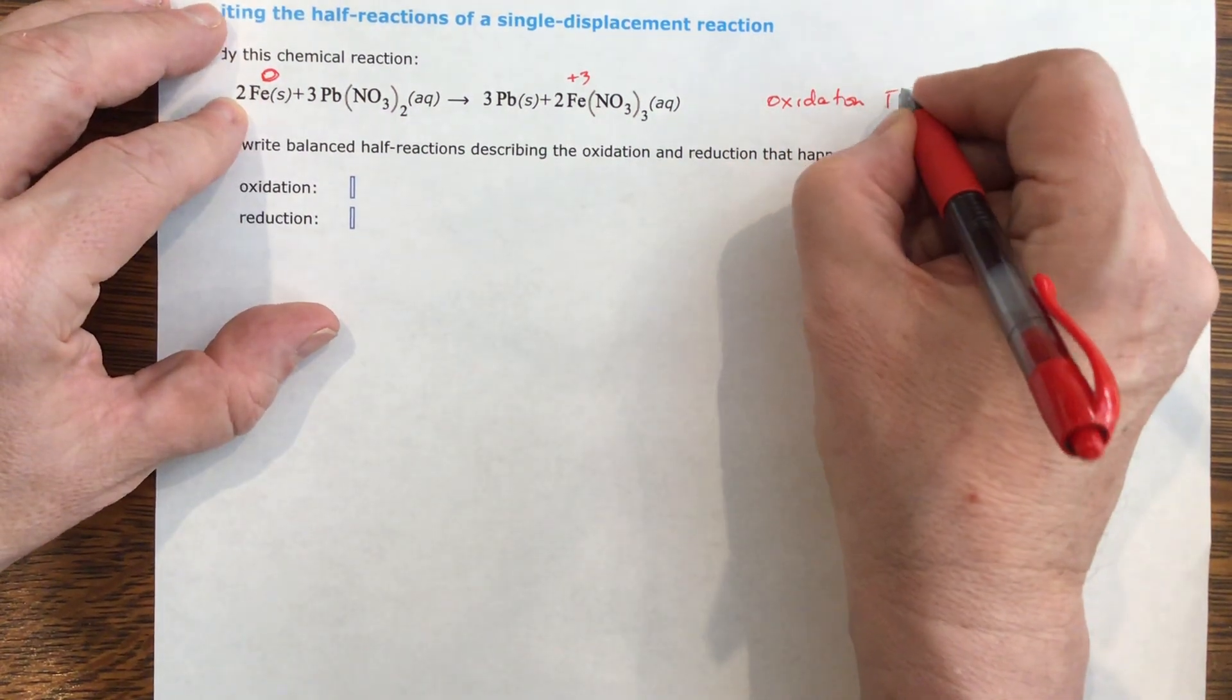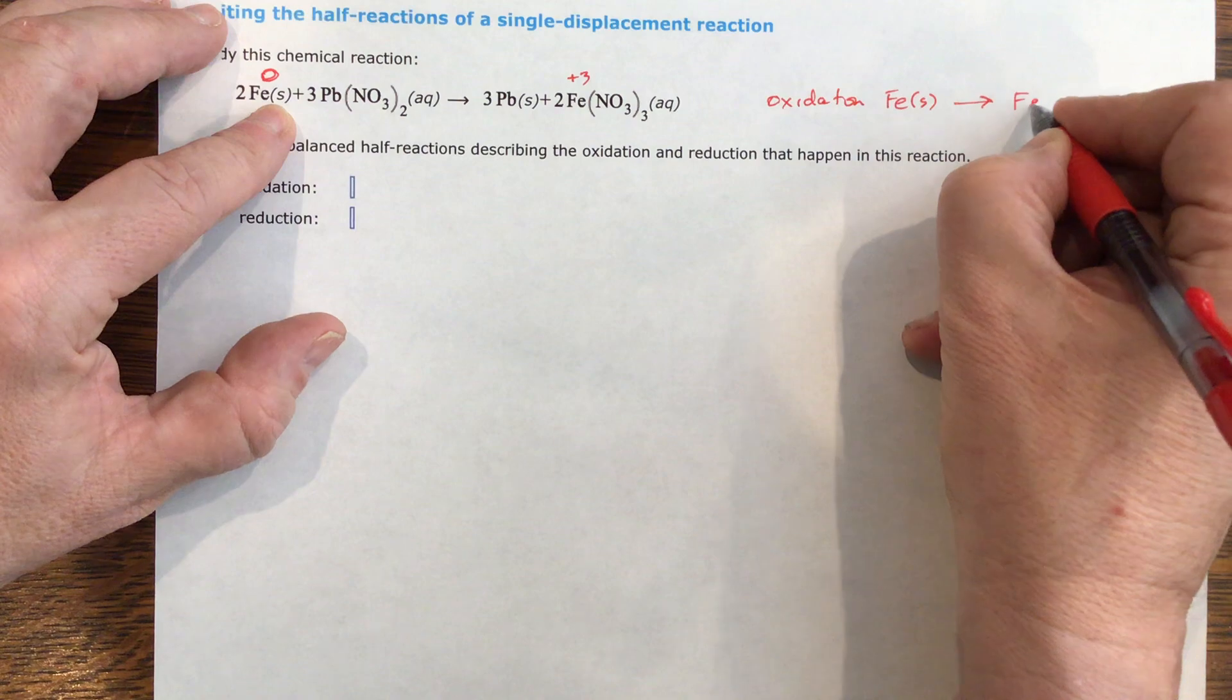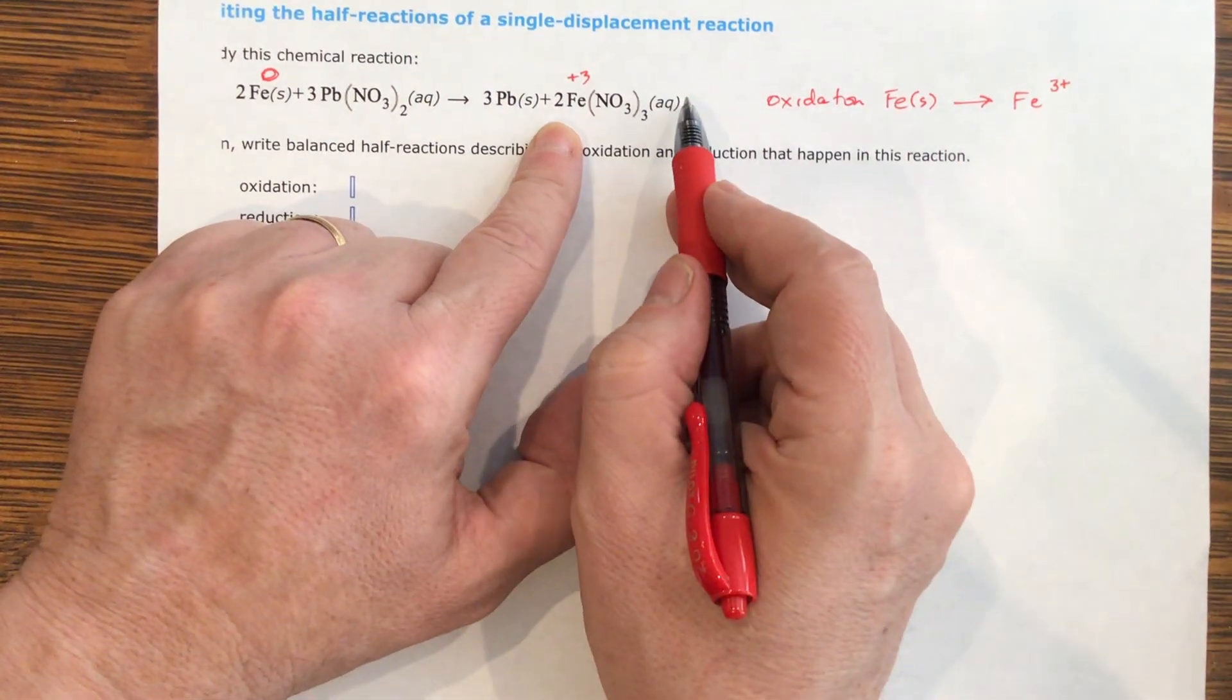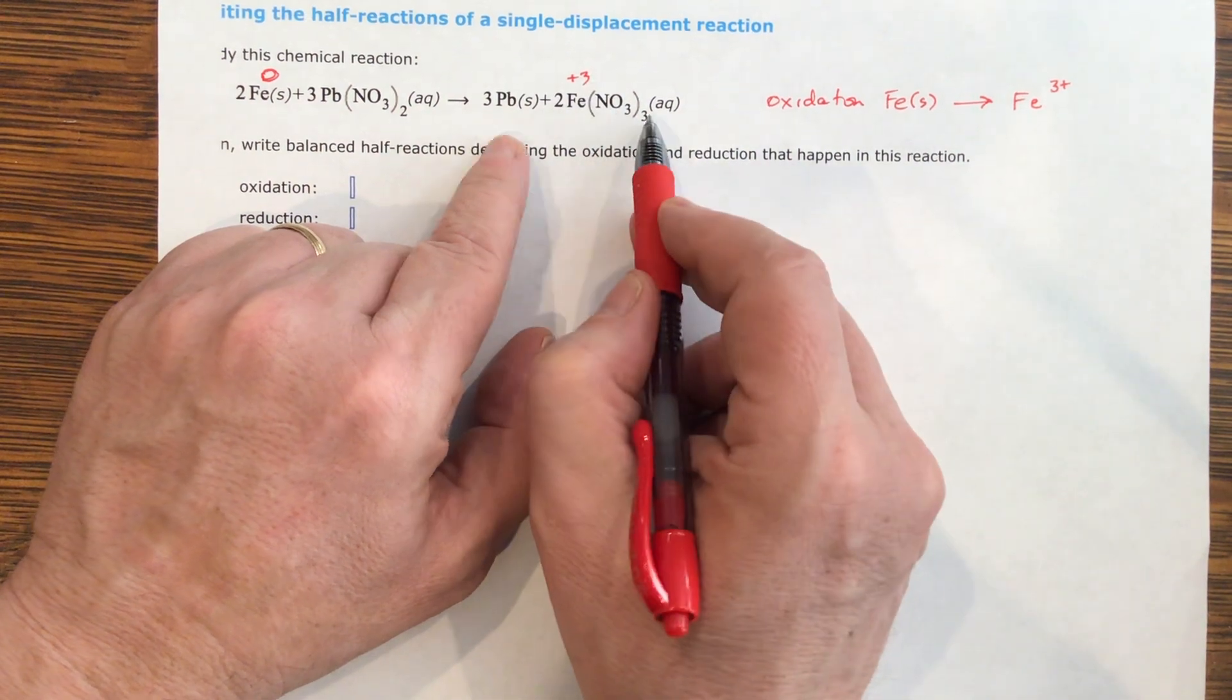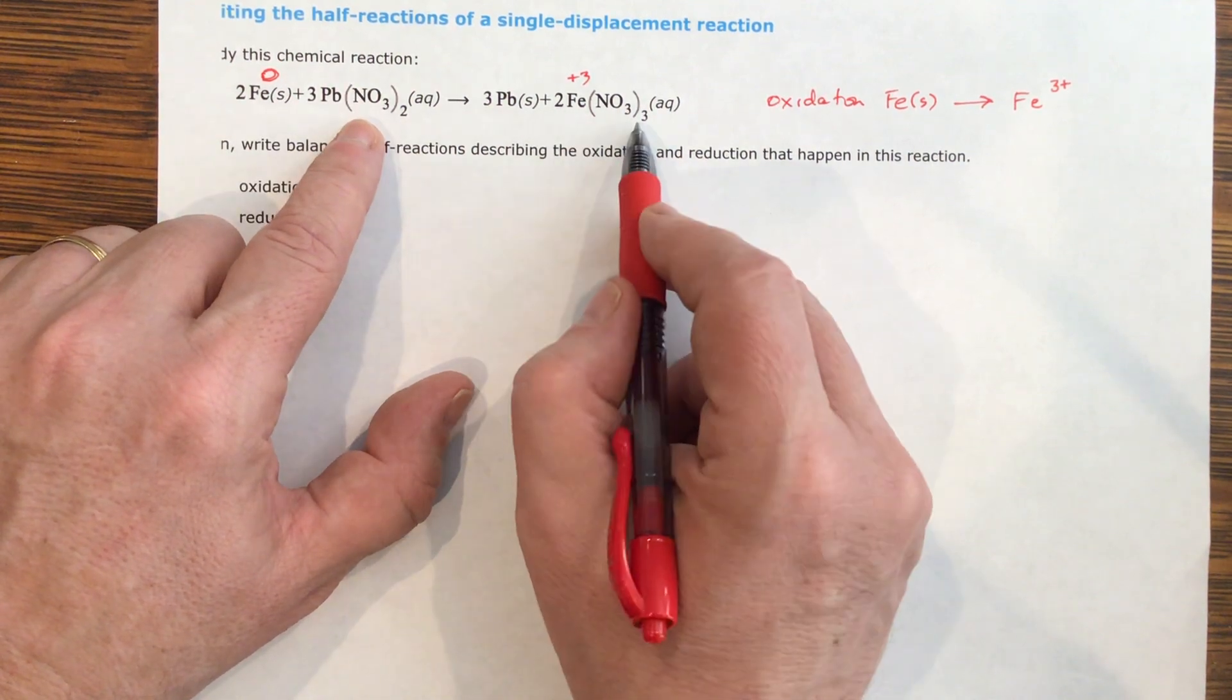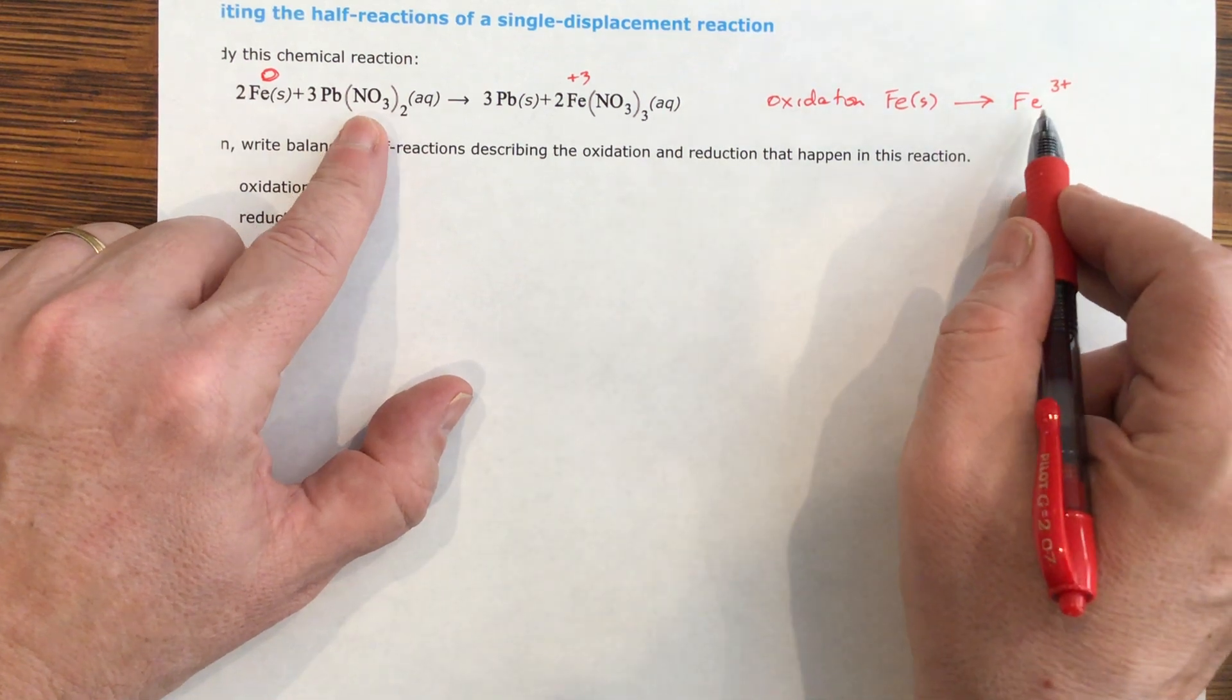Oxidation is your iron, solid iron going to Fe³⁺, because this is aqueous, which means they'll break apart anyway. You'll have Fe³⁺ and three nitrates floating in the water. This is a spectator ion because you're going to have nitrates in six of these and six of these nitrates also in the water. So your oxidation is going to be your iron going to iron ion.